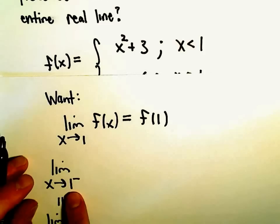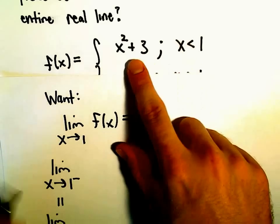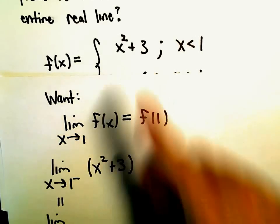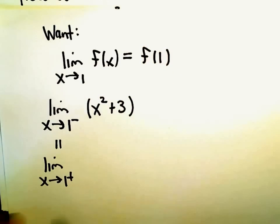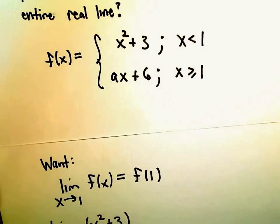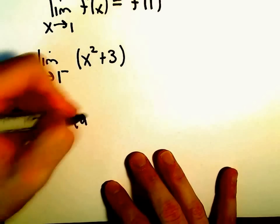Well, if x is approaching 1 from the left, we're using values of x smaller than 1. So we would be using the function x squared plus 3. When we do the limit as x approaches 1 from the right, now we're taking x coordinates larger than 1. So we would use the function ax plus 6.